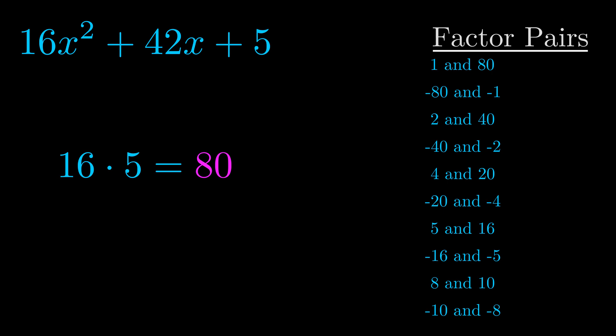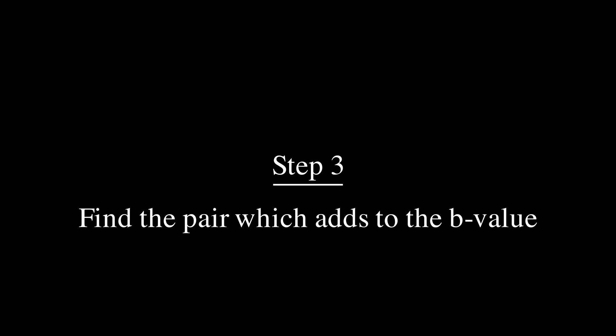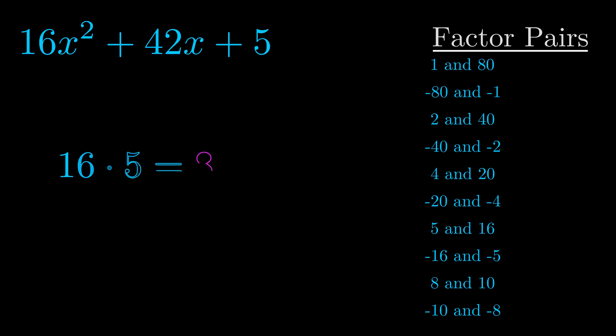Now once you have these factor pairs the goal is to find which of these pairs adds to the b value. The b value is the coefficient on the x term. That's the middle term, the one that we haven't done anything with yet. And really this is the only factor pair that we need.